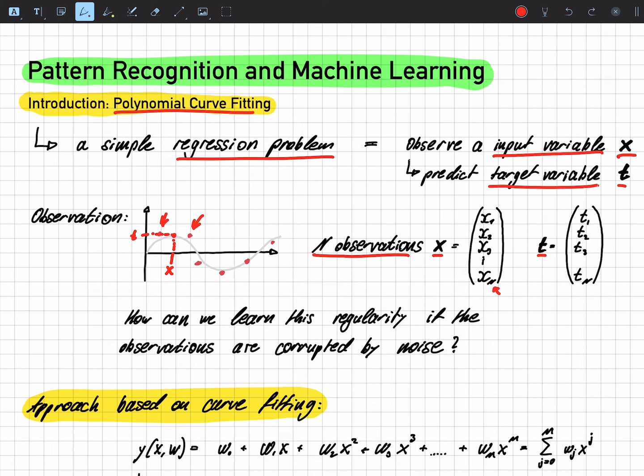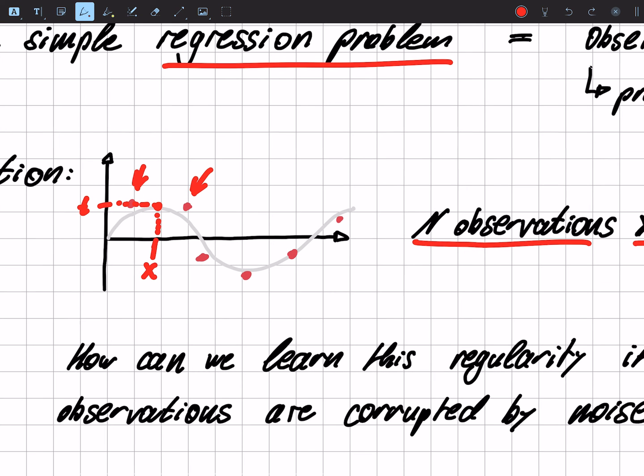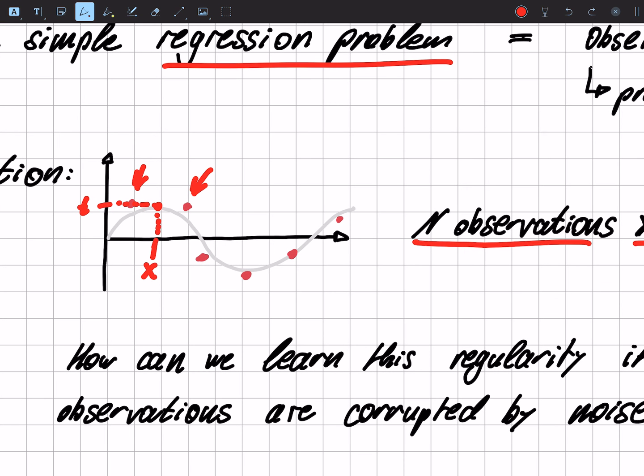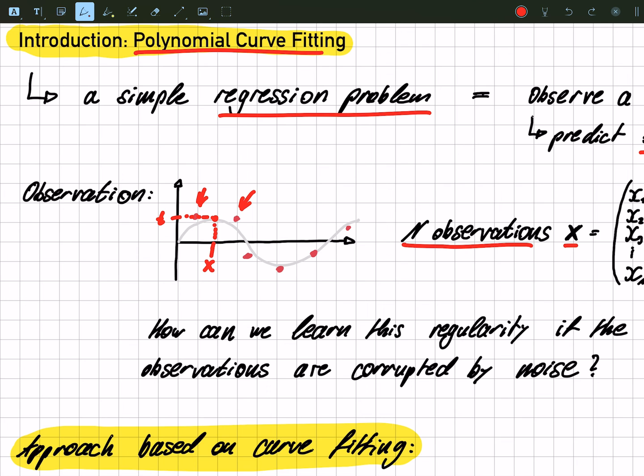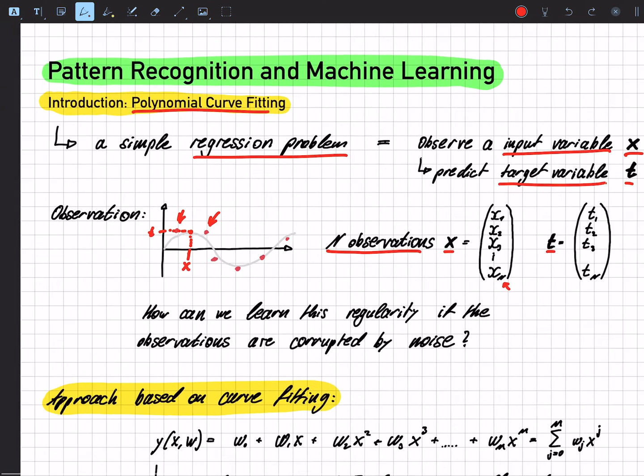But the point is that we do not have the exact observations. The points are not exactly on the sine curve and they are corrupted by noise. And we have to take this noise into account.